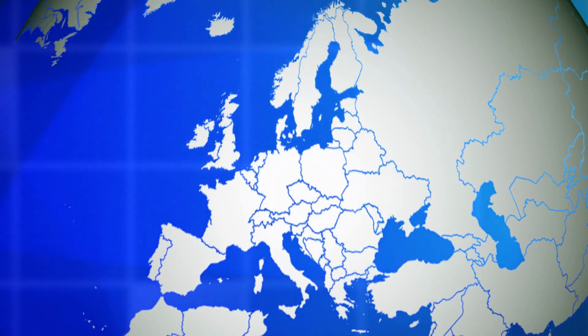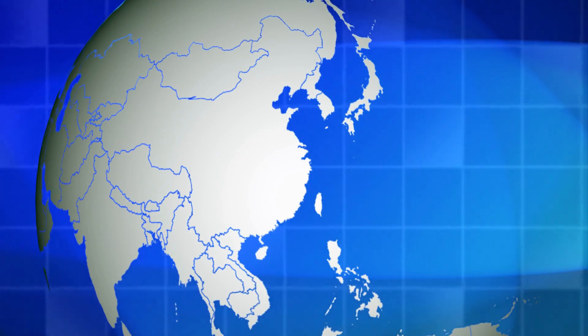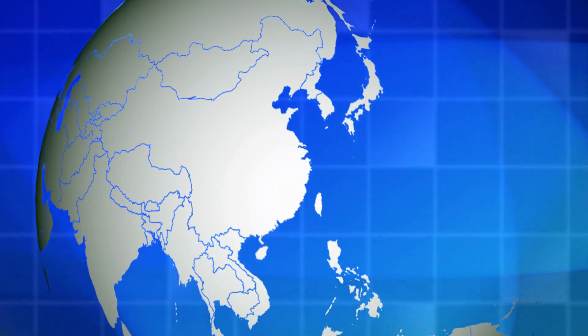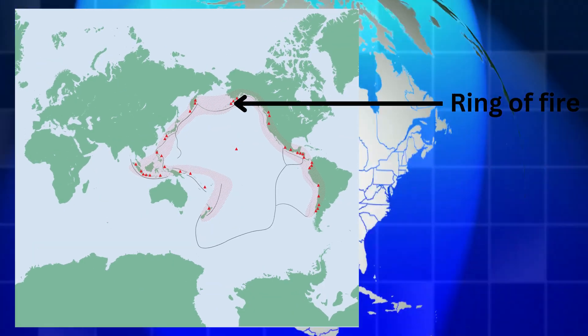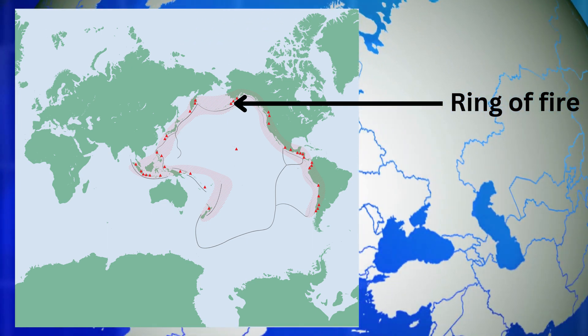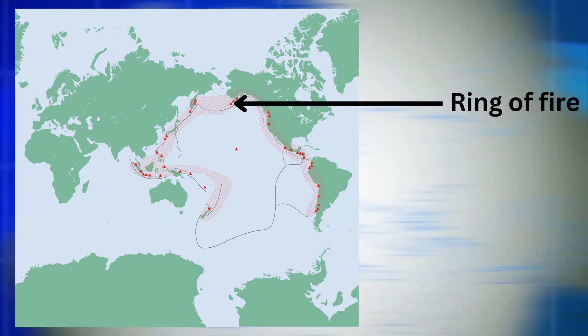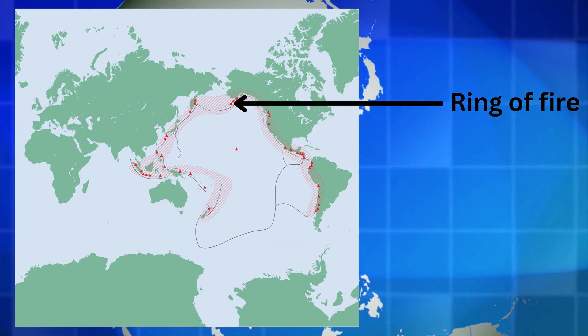Volcanoes can be found all over the world, but they are most common along the edges of tectonic plates. The Ring of Fire, which is an area of active volcanoes that encircles the Pacific Ocean, is the most volcanically active region on Earth.